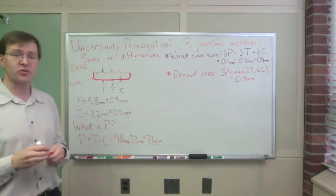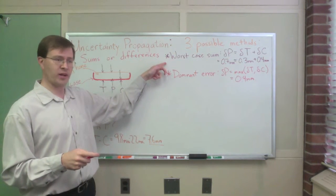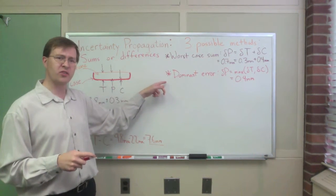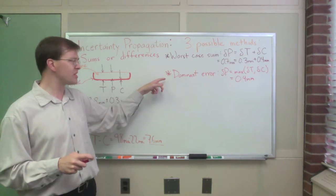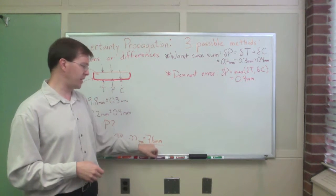It turns out, strangely enough, that it is usually not as much of an underestimate as this is an overestimate. So dominant error, especially if one uncertainty is much bigger than the others, is going to be actually a pretty darn good way of doing uncertainty calculations.